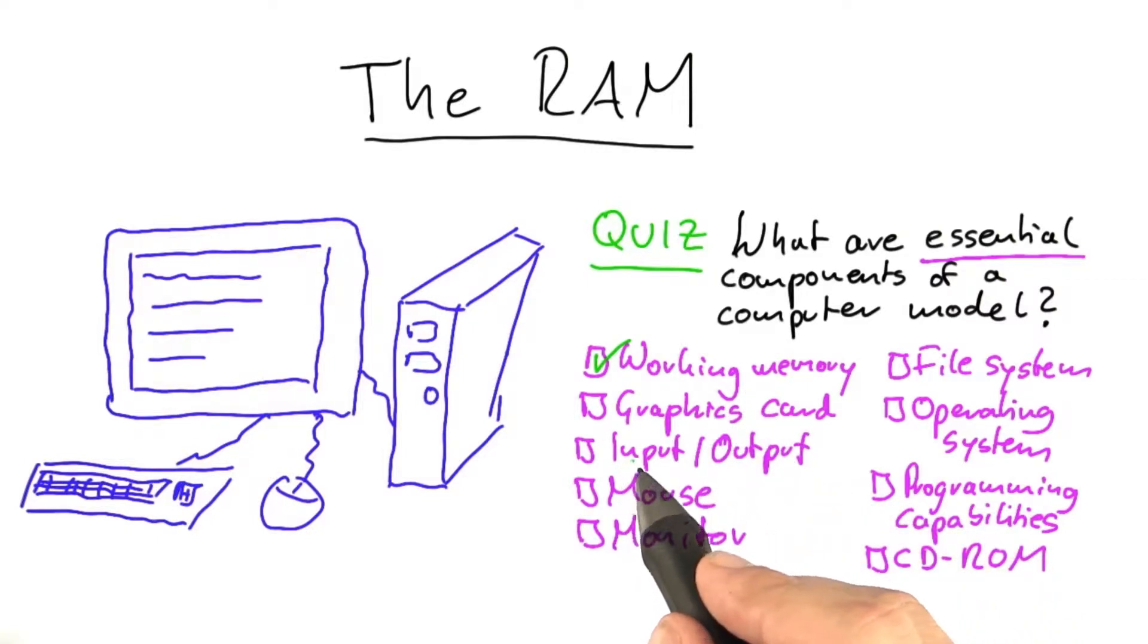The second one is you need some sort of input and some sort of output. It doesn't really have to be a graphical output or be displayed on a monitor, but you need to be able to tell the computer what the input is that it's supposed to work on, and you need to have some way of reading the output once the computer is done.